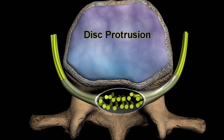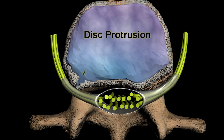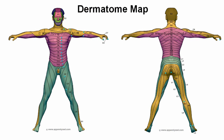A disc protrusion is a more localized process where there is focal degeneration of the disc that extends into the spinal canal, or as in this case, the neural foramina, where it can compromise a single nerve root. Again, if this is the L4-5 disc, this would be the L4 nerve root. Dermatome maps show the approximate sensory distribution of each of the nerve roots, which allows us to correlate imaging findings with the patient's clinical symptoms, as we will see in the next example.